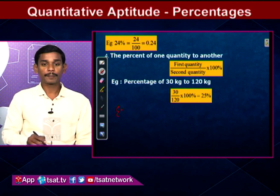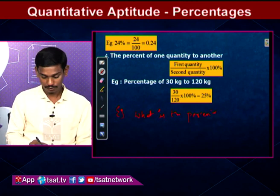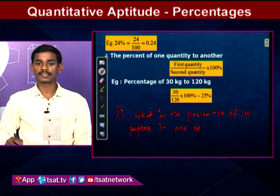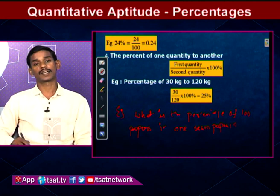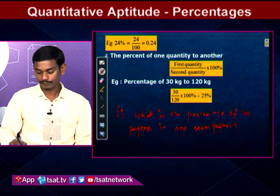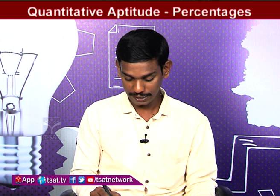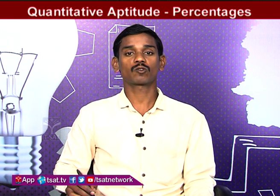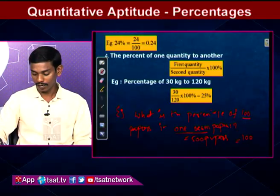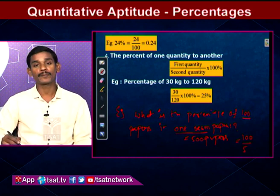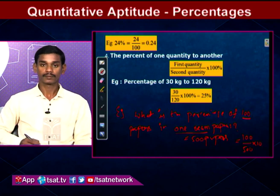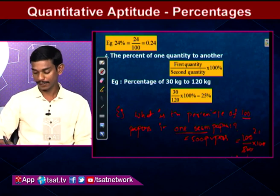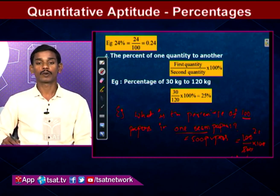Another example: what is the percentage of unread papers in one ream of papers? One ream equals 500 papers. Using the formula — first quantity (unread papers) divided by second quantity (one ream = 500 papers) × 100. The zeros cancel, giving 20%. So unread papers in 500 papers is 20 percent.